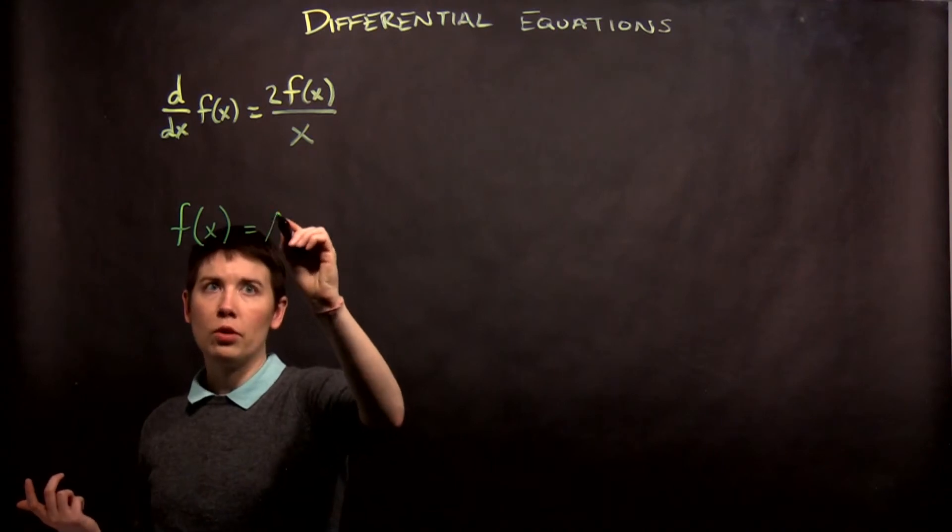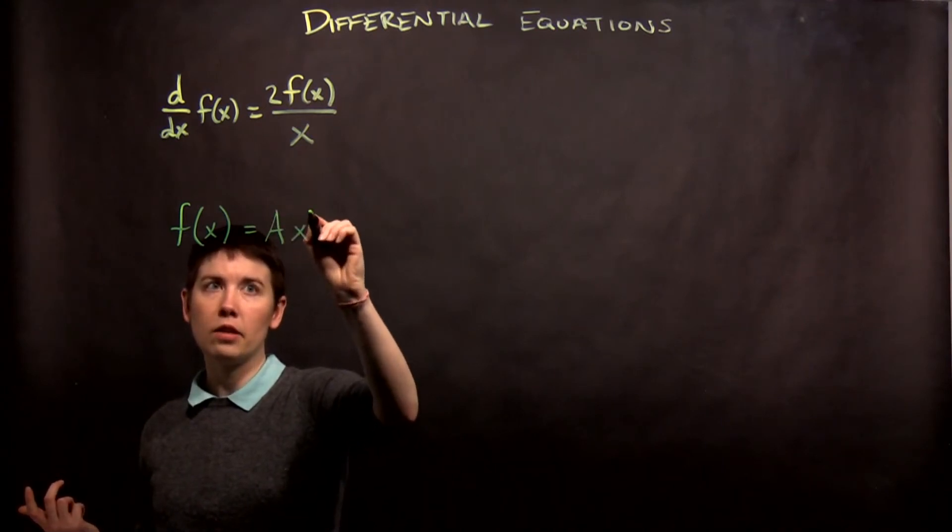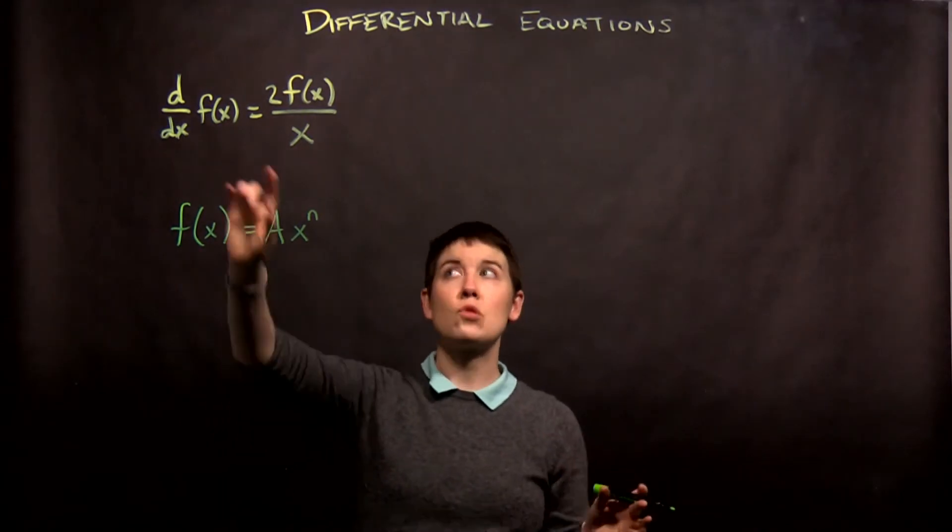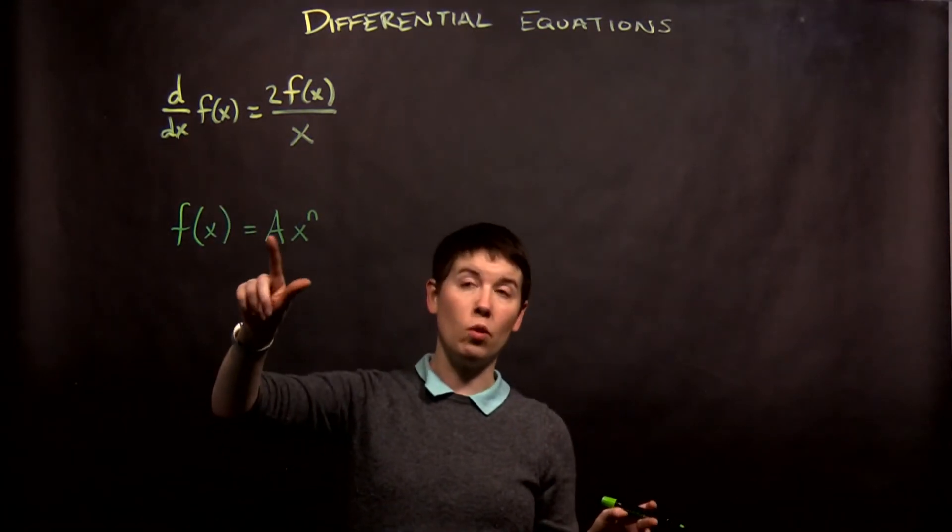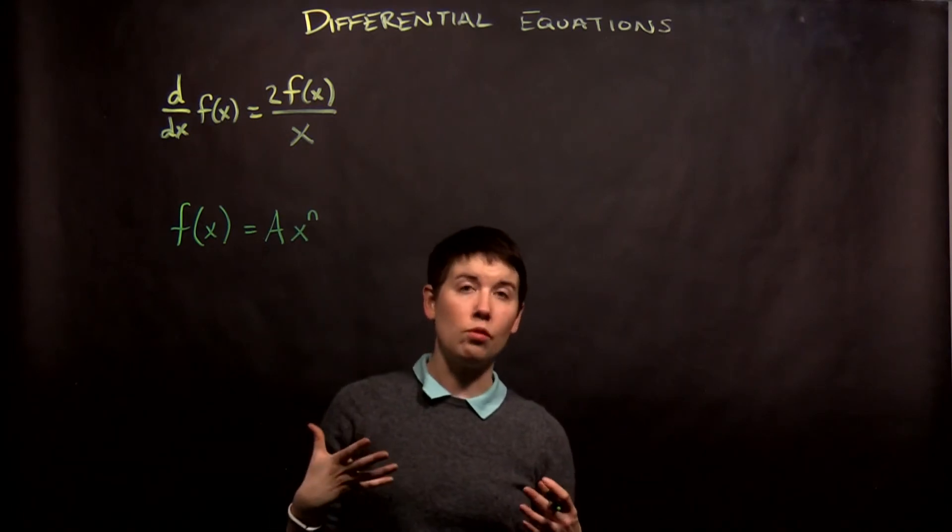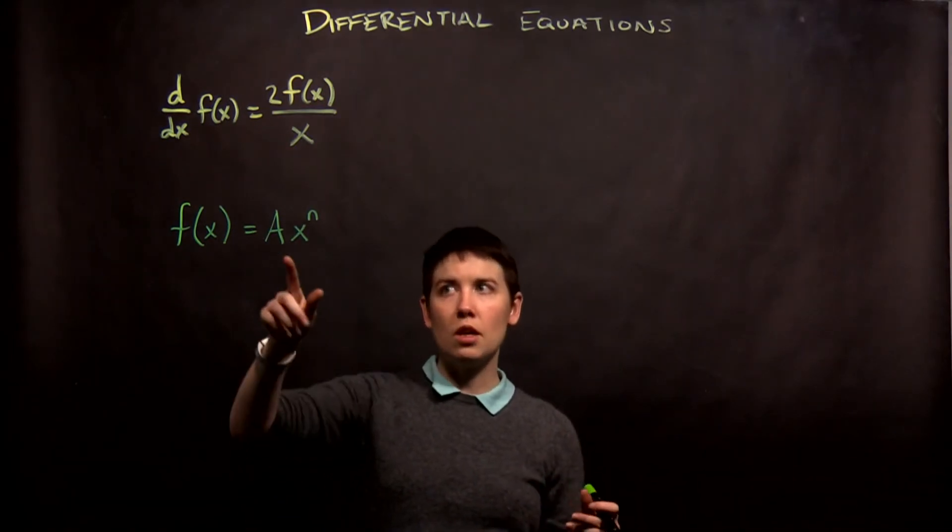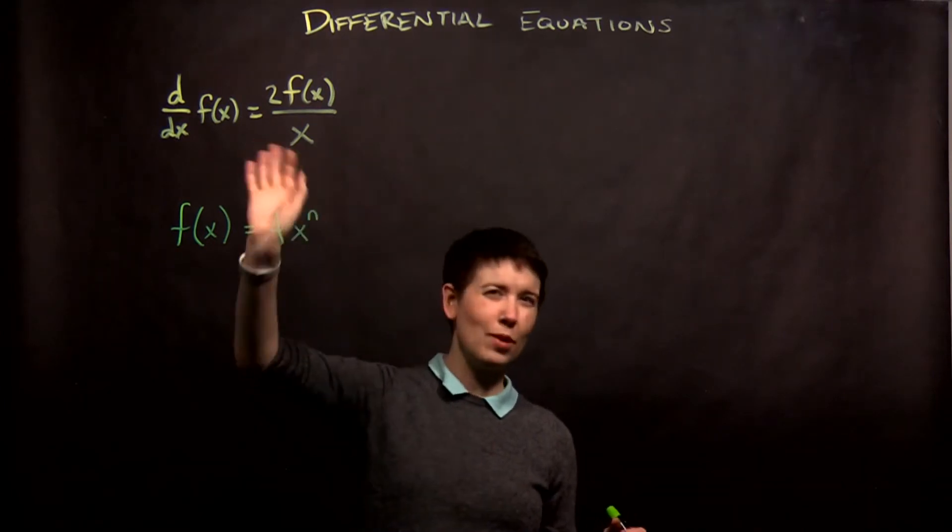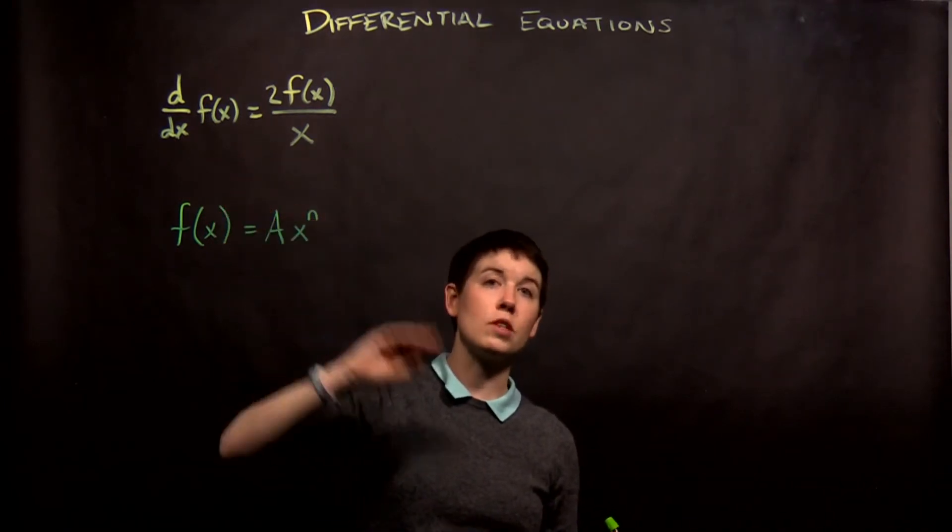So I'm going to say ax to the n. I expect a to be my free parameter. This is a first derivative, I think I'm going to have one free parameter. n is now something that I think I need to solve for. In fact, this might be ax to the n, and there might be an x to the n plus 1 or minus 1. There might be a bunch of stuff happening here, but let's start with something simple.